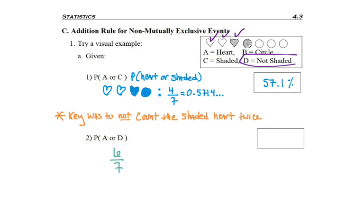But then you were looking for something that was not shaded. So the middle piece is neither a heart nor a non-shaded piece, but you could count the last three pieces. So six of your seven pieces were hearts or non-shaded to give you 85.7%.